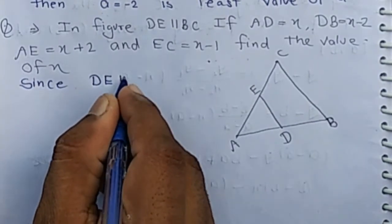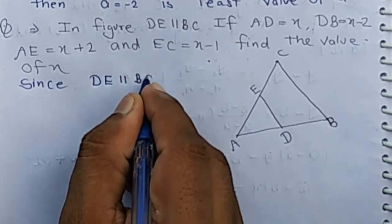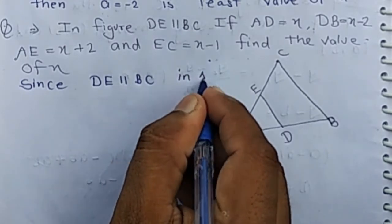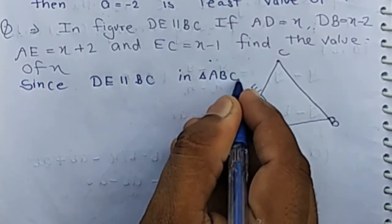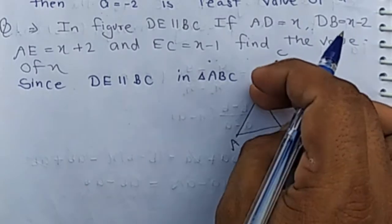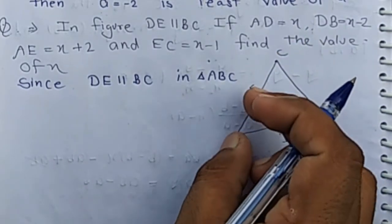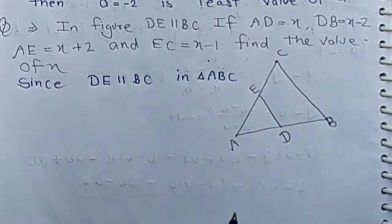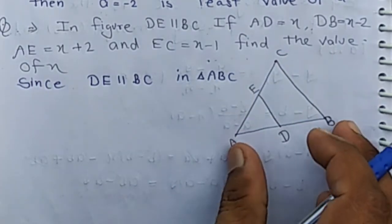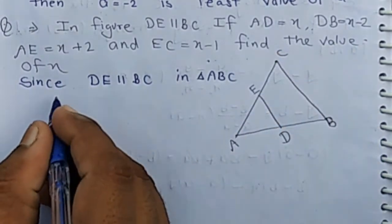Since DE is parallel to BC in triangle ABC, by Thales' theorem, AD by DB equals AE by EC. This means DE divides the other two sides in the same ratio.